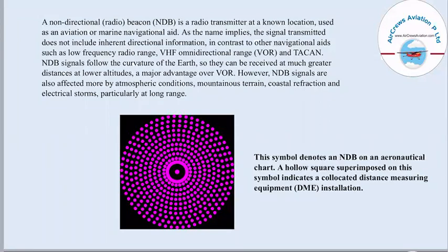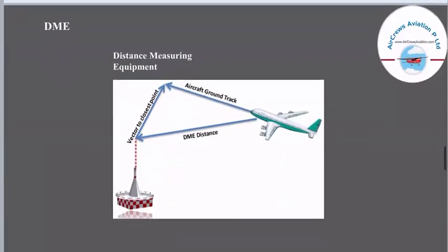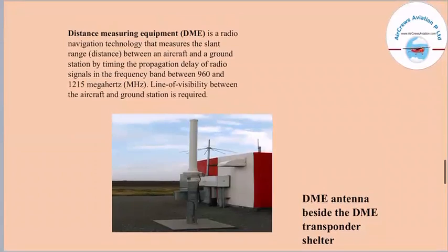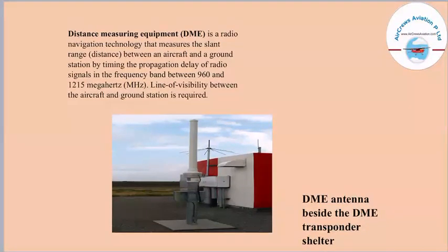In this picture, this symbol denotes an NDB on an aeronautical chart. A hollow square superimposed on this symbol indicates a collocated Distance Measuring Equipment (DME) installation. DME is basically Distance Measuring Equipment — a radio navigational technology that measures the slant range distance between an aircraft and a ground station by timing the propagation delay of radio signals in the frequency band between 960 and 1215 MHz, requiring line of visibility between the aircraft and ground station. This picture shows the DME antenna beside the DME transponder shelter.